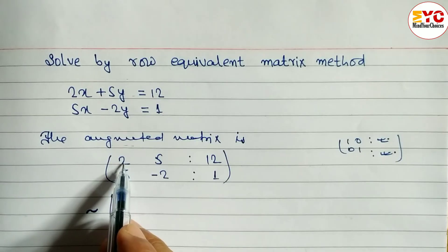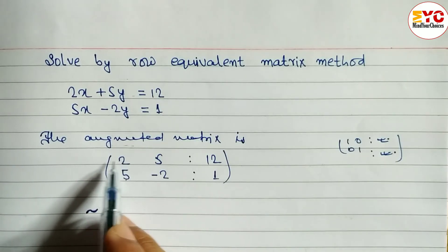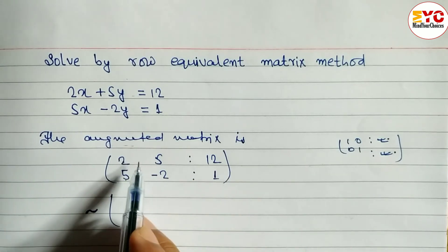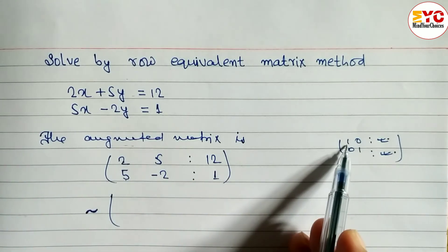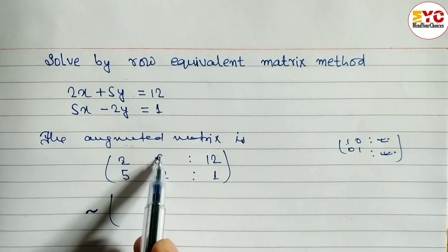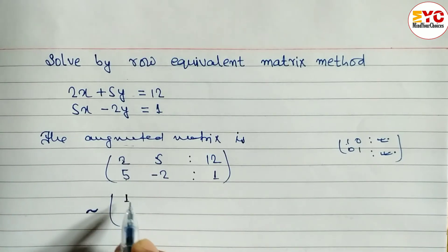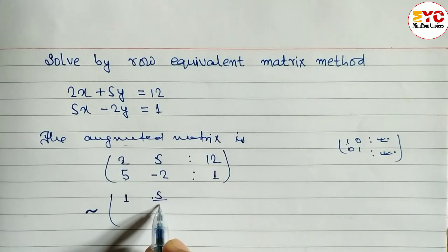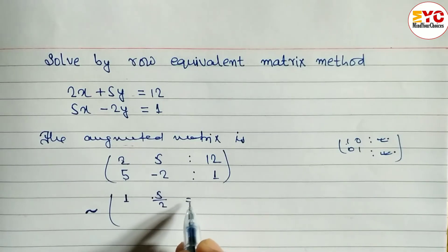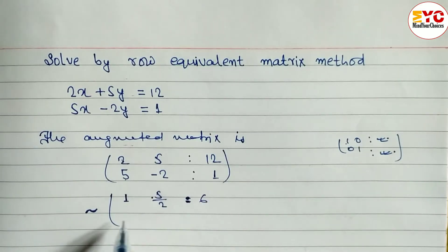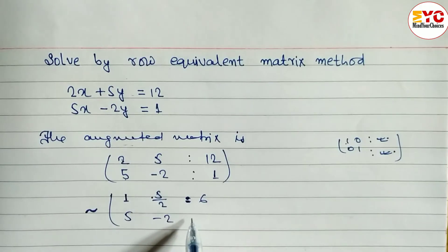How to convert this to the form of 1? We have to divide row 1 by 2. When you divide by 2, we get 1. We need 1 here in the first position. So dividing row 1 by 2: we get 1, then 5 by 2, and here we get 12 by 2, which is 6. The second row we keep the same.